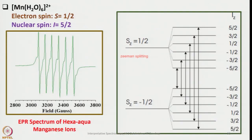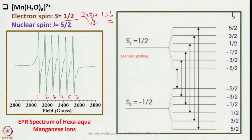Now let us look at hexa aqua manganese(2+). Here the electron spin is s=1/2 and the nuclear spin is i=5/2. Since i=5/2, it would split into 6 lines. Recording the EPR spectrum of hexa aqua Mn2+ shows 6 lines, and one can show all possible transitions between which these transitions occur — 1, 2, 3, 4, 5, 6 lines — very similar to the coupling tree in NMR spectroscopy.